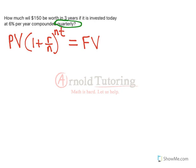So we fill in our formula. We start with $150, that's our present value today, times 1 plus the annual rate, which is 6%, divided by the number of times it's compounded. If we want that to be quarterly, that's 4 times per year, to the power of 4 times the number of years, which is 3.